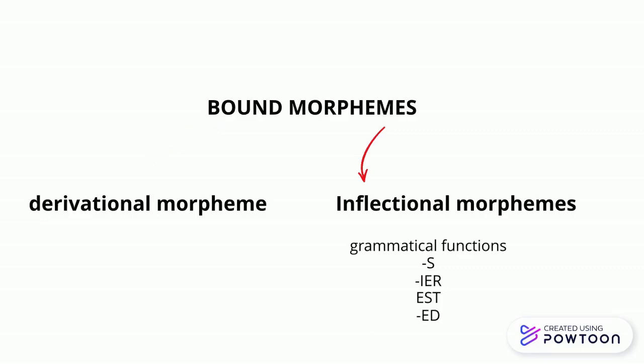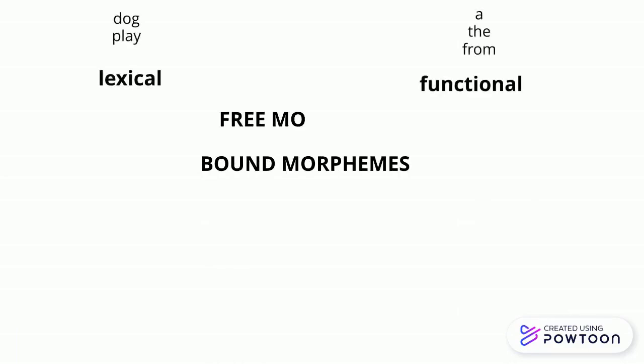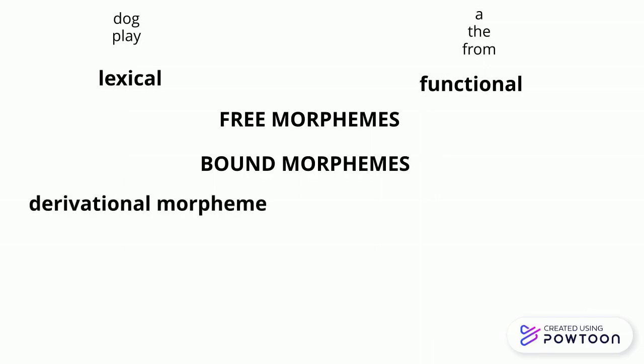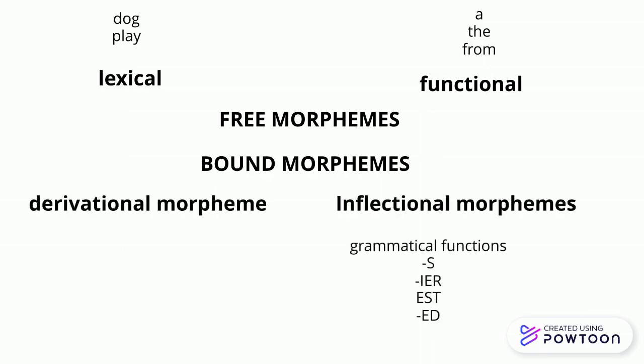To summarize, morphology is the study of the structure of words and word formation. Morphemes are the smallest meaningful unit in a language, and there are two types: free and bound. Bound morphemes have two categories: derivational and inflectional. Derivational morphemes change the category of the word when added to a free morpheme, while inflectional morphemes are used to indicate the aspects of the grammatical function of a word.